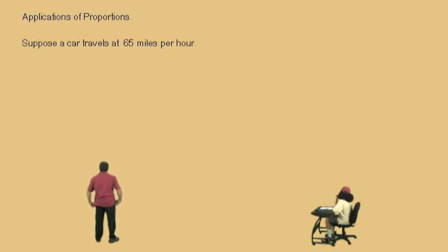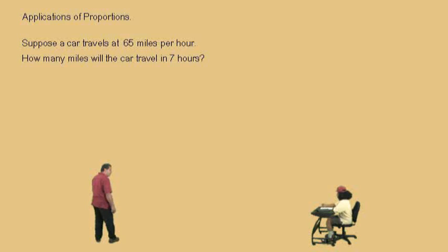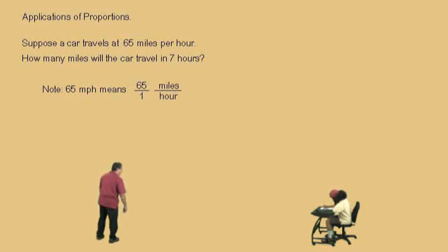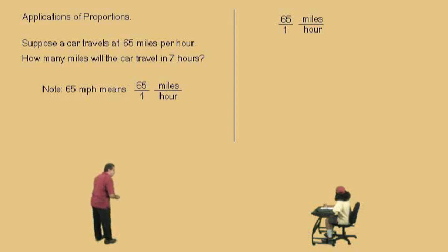Now, suppose a car travels 65 miles per hour. How far does it go in 7 hours? Well, first, let's talk about 65 miles per hour. What that is, is a ratio of 65 to 1, but it's 65 miles to 1 hour. And so, we'll go ahead and write our ratio over there, and now we're going to set up our proportion.